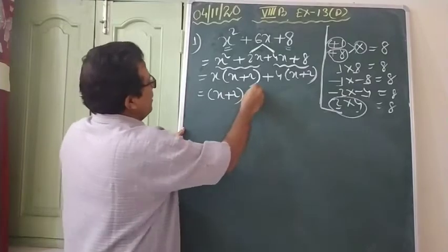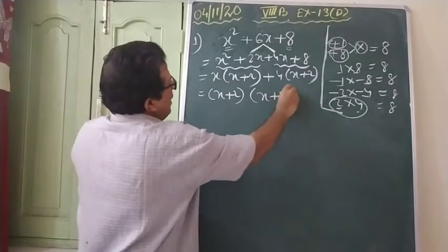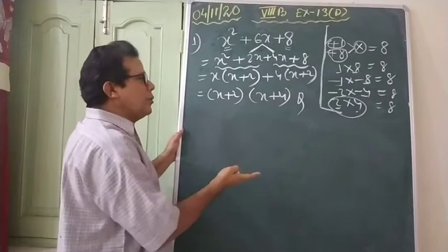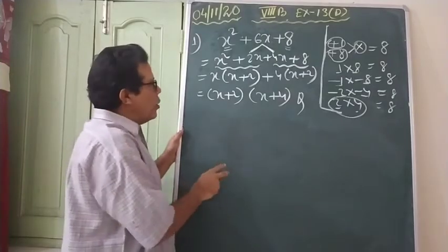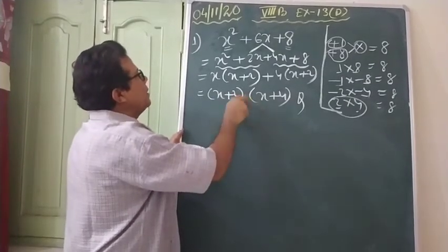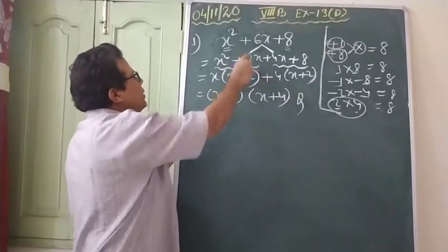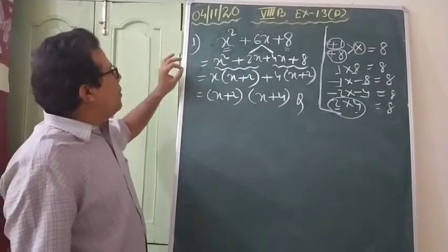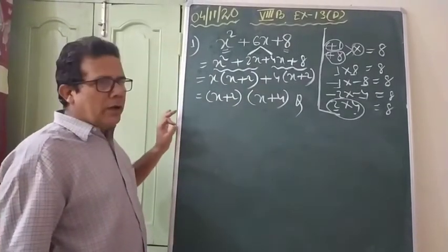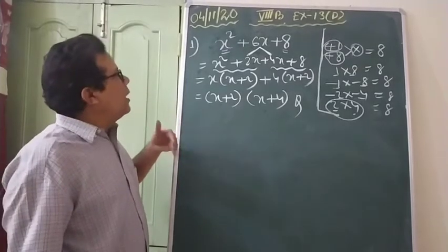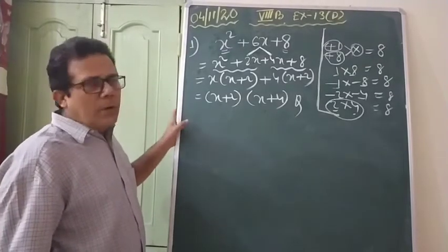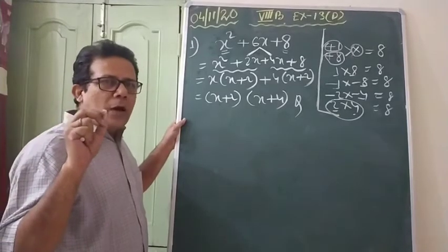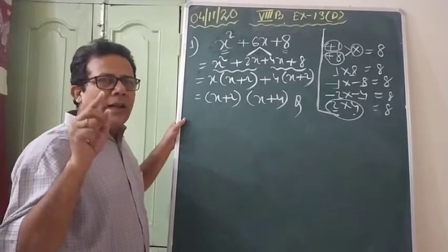Now, here you can check whether the answer is correct or wrong by multiplying it. After simplification, you will see the first expression has to come back — this is how you can verify it. I am going to solve another one or two problems in today's class to make you understand again. So I am now going to solve the next problem.